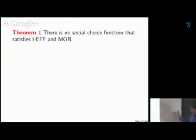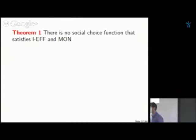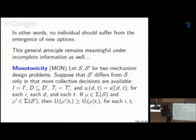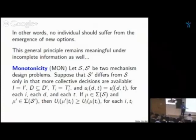The first result is negative: there is no social choice function satisfying both interim efficiency and monotonicity in this framework. This incompatibility exists even in the literature under complete information — Luce and Raiffa already noted that efficiency and monotonicity are difficult to combine. The difference here is that this incompatibility occurs even on the class of quasi-linear mechanism design problems — even with perfect transferable utility — because incentive constraints restrict what you can achieve at the interim stage.